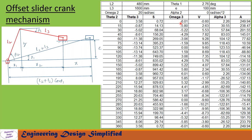Similarly, in this column omega3 is calculated, and in this column velocity of the slider is calculated. The angular velocity of the crank is taken as counterclockwise, which is positive. When the slider moves from the rightmost to the leftmost position, velocity of the slider is taken as positive. When the slider moves from leftmost to rightmost, velocity is taken as negative — we can see that after 180 degrees all the velocity values are negative.